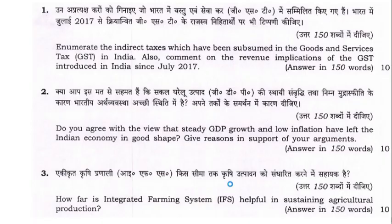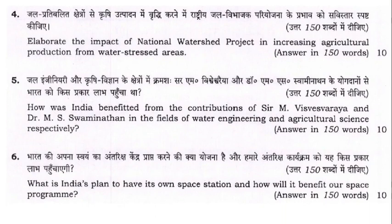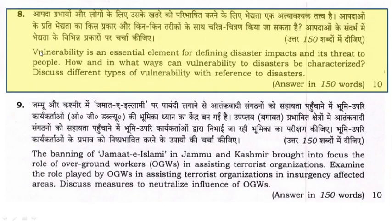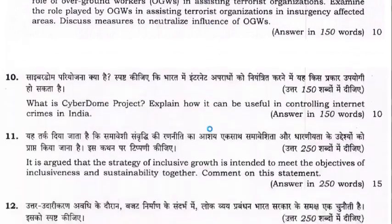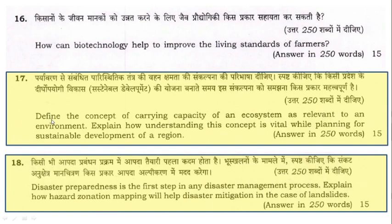In GS3 2019, most questions were related to economics and technology, but environmental questions were also present. These included: 'Vulnerability is an essential element for defining disaster impact and its threat to people. How and in what ways can vulnerability to disaster be categorized? Discuss different types of vulnerability with reference to disasters.' Also: 'Define the concept of carrying capacity of an ecosystem as relevant to an environment. Explain how understanding this concept is vital while planning for sustainable development of a region.' And: 'Disaster preparedness is the first step in any disaster management process. Explain how hazard zonation mapping will help disaster mitigation in the case of landslides.' Disaster is frequently asked in UPSC paper and is mentioned in the syllabus.